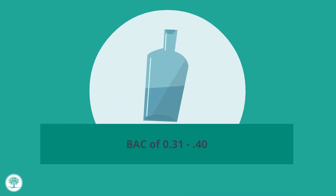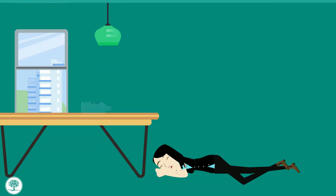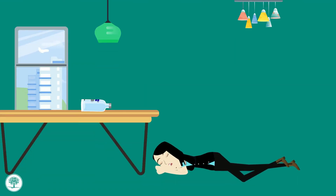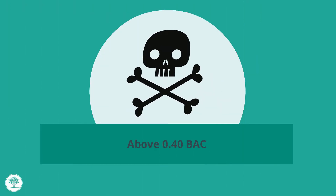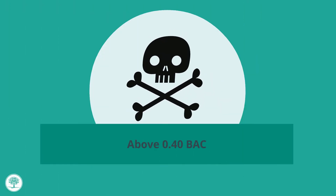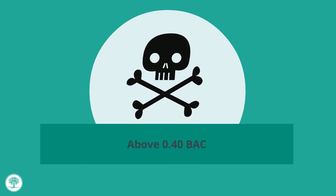At 0.31 to 0.40 BAC you are at four times the legal limit. You may have changes in feelings and personality, loss of consciousness, or fall into a coma. Death is possible at this range. Symptoms include slurred speech and lack of balance. If your BAC goes above 0.40, it can lead to death.